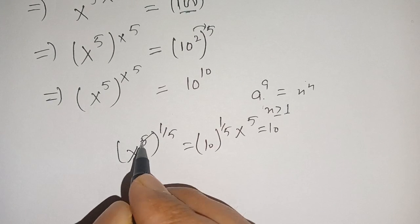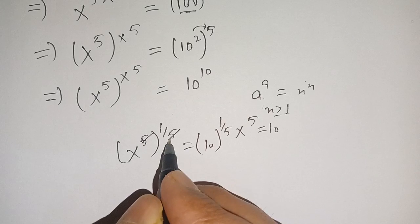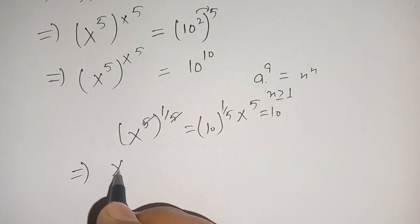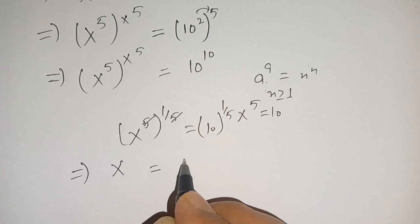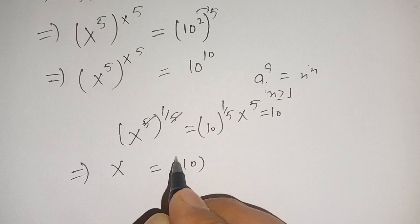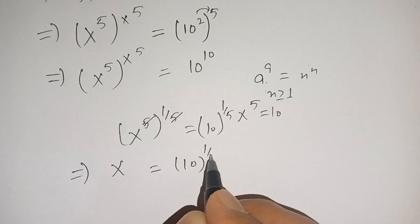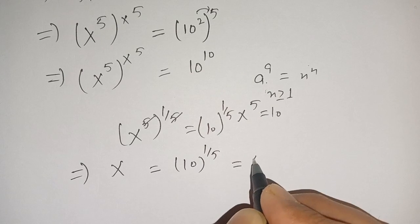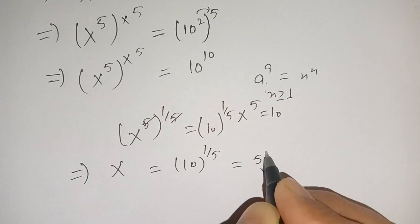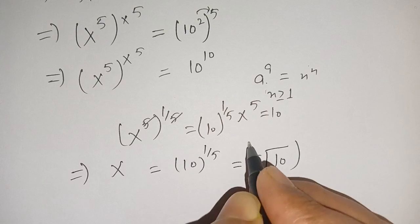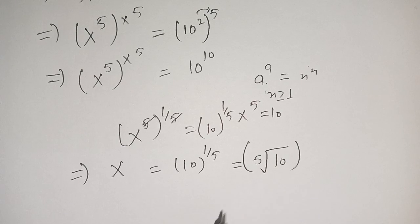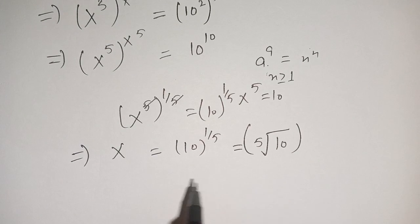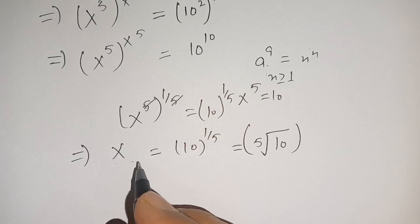We can cancel out the 5 in the exponent and get x equals 10^(1/5), or equivalently the fifth root of 10. Now our next step is to verify whether this is our solution or not.